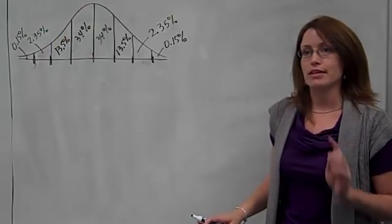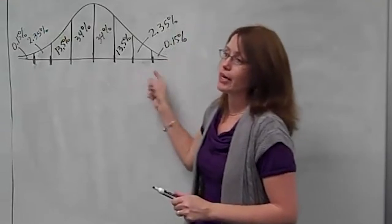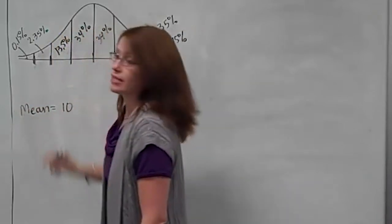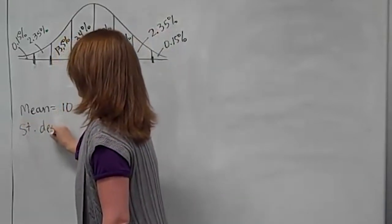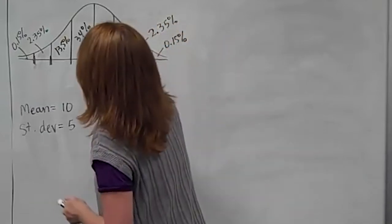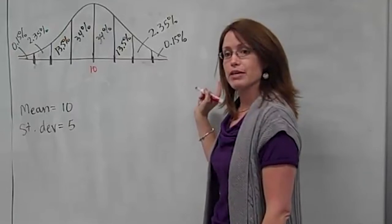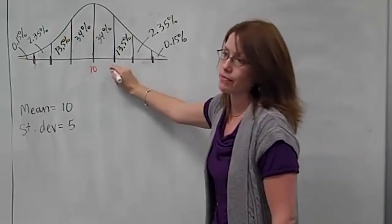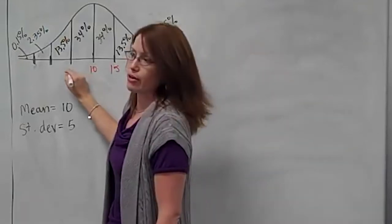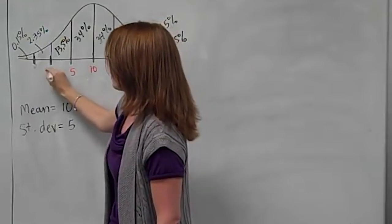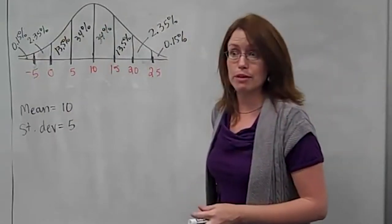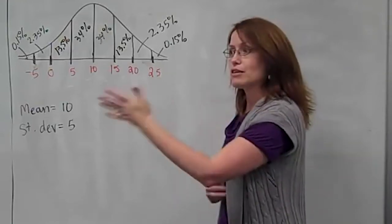The only thing that changes are the numbers on the axis, and I'll tell you the mean and standard deviation. For example, if the mean is 10 and the standard deviation is 5, put 10 in the middle. Add 5 each time going right: 15, 20, 25. Subtract 5 each time going left: 5, 0, negative 5. Don't be bothered by negative numbers — that's just how the numbers work out depending on your example.